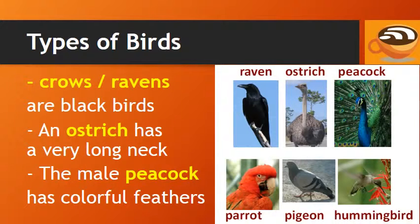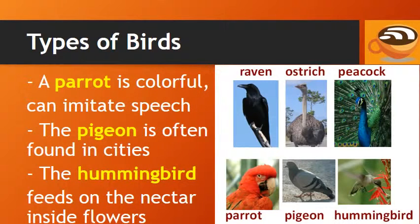Crows and ravens are blackbirds. An ostrich is a large bird with a very long neck, and the male peacock is known for its colorful feathers. A parrot is also colorful and can imitate human speech. The pigeon is often found in cities, and the hummingbird feeds on the nectar inside flowers.